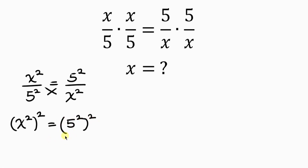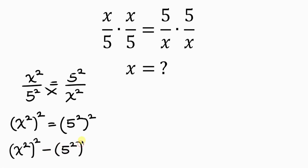Our next step will be to move 5 squared all raised to the 2 to the left-hand side. So we have x squared all raised to the 2 already on the left, and as this term crosses to the left-hand side, it becomes negative 5 squared all raised to the 2. And this is now equal to 0.